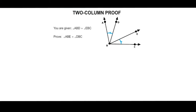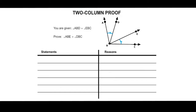Here we have that you are given that angle ABD is congruent to angle EBC, and they want us to prove that angle ABE is congruent to angle DBC. When you do a two-column proof, you have to make a table.